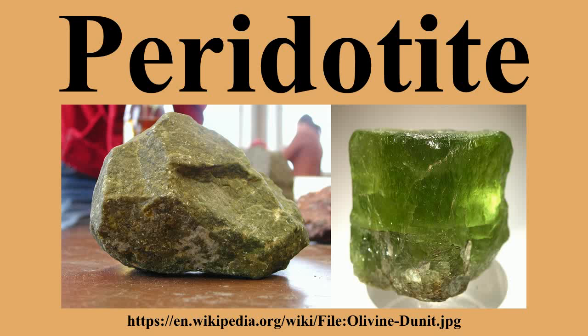Oceanic plates consist of up to about 100 km of peridotite covered by a thin crust, commonly about 6 km thick, consisting of basalt, gabbro, and minor sediments. The peridotite below the ocean crust — a basal peridotite — is found on the walls of rifts in the deep sea floor. Oceanic plates are usually subducted back into the mantle in subduction zones.